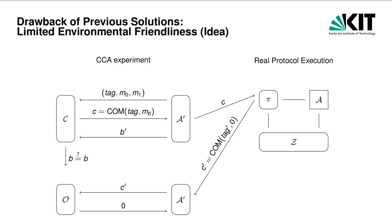In the CCA security game — CCA is short for chosen commitment attack — an adversary A' interacts with a challenger Z. Like in the normal hiding game for commitments, the adversary first chooses two messages M0 and M1, and also sends some tag. The challenger samples a uniform random bit B and creates a commitment to M_B using the tag provided by the adversary. The adversary must decide if this is the commitment to M0 or M1 and wins if it guesses correctly. During the whole execution, the adversary may interact with the CCA oracle O. When the adversary sends a commitment to this oracle, the oracle extracts the commitment and sends the committed value back to the adversary.